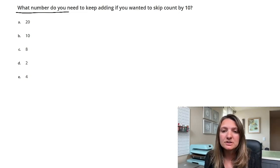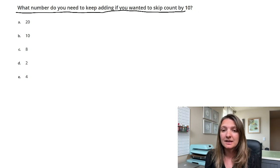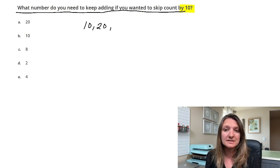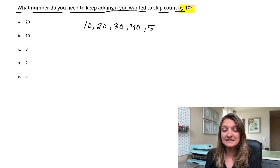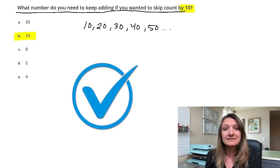Question one: What number do you need to keep adding if you want to skip count by 10? Our key number here is 10. If they're going to ask you to skip count, you're going to go 10, 20, 30, 40, and keep going on. So our answer is going to be B: 10.